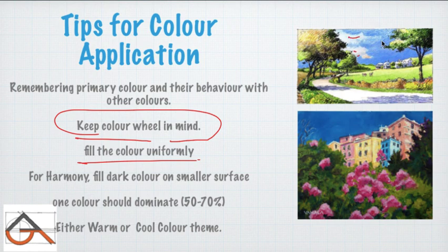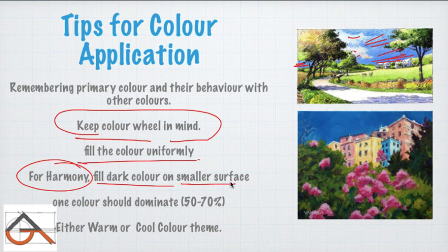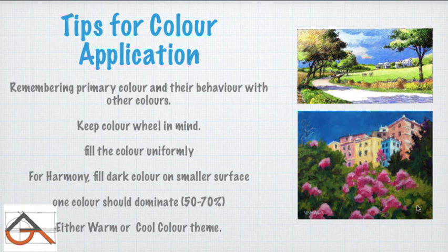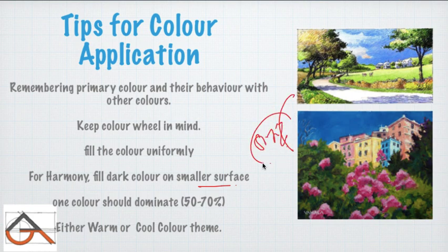If you apply a light blue color unevenly — sometimes light, sometimes dark — it will look inconsistent. Color uniformity is essential. Also, fill dark color on a smaller surface area. When you use dark color, apply it in small areas only — you can see in examples that dark color is used very sparingly, in edges and small parts only. Don't use too much dark color. One color should dominate: 50 to 70 percent of the composition should be dominated by one or two colors. Choose either a warm or cool color theme.